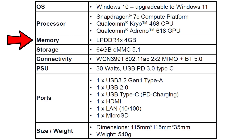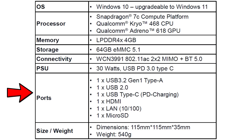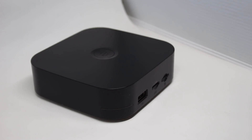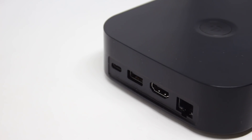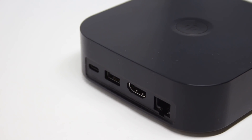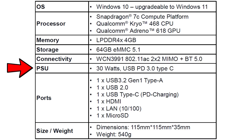You also get four gigabytes of RAM, 64 gigabytes of internal storage, Wi-Fi 5 2x2 MIMO, Bluetooth 5, a USB 3.2 Gen 1 port, a USB 2.0 port, HDMI, LAN, microSD, and the whole thing is powered by a 30-watt USB Power Delivery Type-C socket. You do get the power supply in the box when you buy the kit.